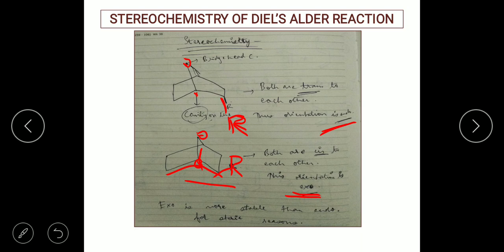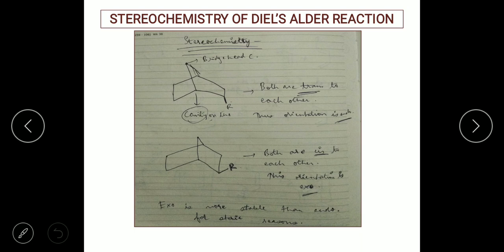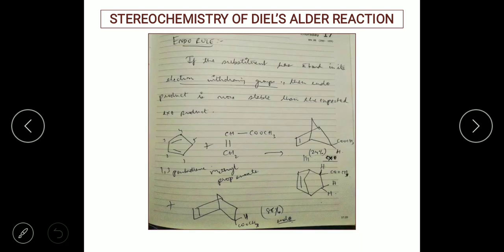In endo, the bulkier R groups face the cavity, creating a lot of steric hindrance, which is why exo is considered very stable. However, if there are double bonds in the R group — for example, an ester like COOCH3 — then the stability can change so that endo will be more stable than exo. That rule is what we call the endo rule: if the substituent has a pi bond in its electron-withdrawing group, the endo product is more stable than the expected exo product.